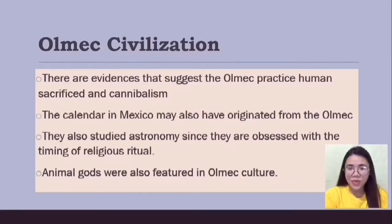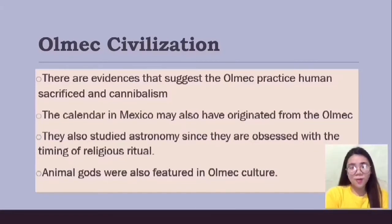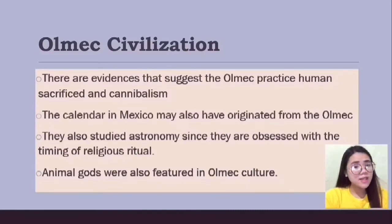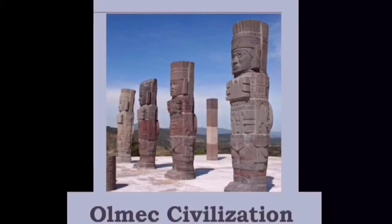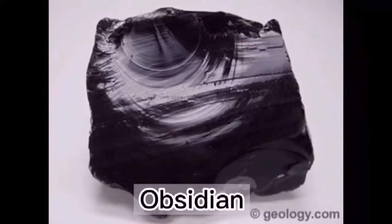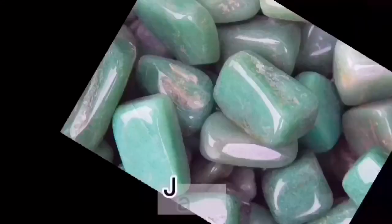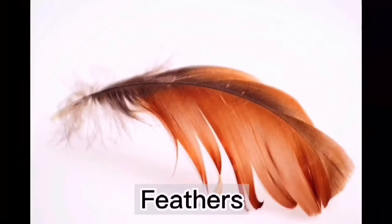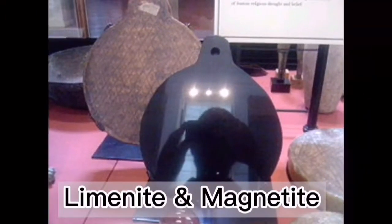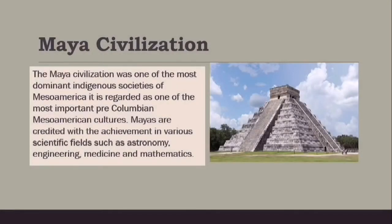In the Olmec civilization, there is evidence that the Olmecs practiced human sacrifice and cannibalism. There is also evidence that the calendar of Mexico must have originated from the Olmec, and as they were obsessed with the timing of religious rituals, they studied astronomy. Animal gods were also featured in Olmec culture. The Olmecs were known for trading goods such as obsidian, ceramics, jade, serpentine, mica, rubber, pottery, feathers, and polished mirrors of limonite and magnetite.